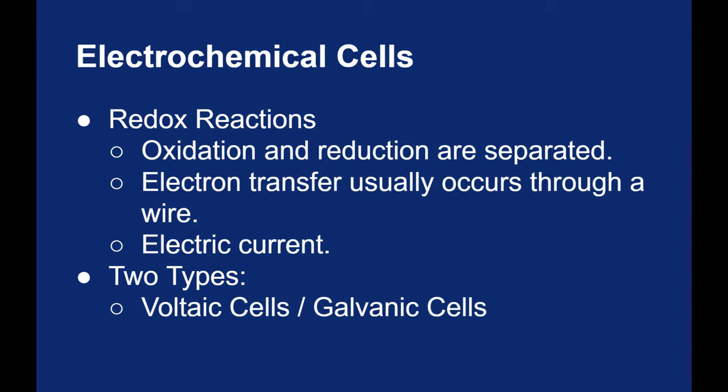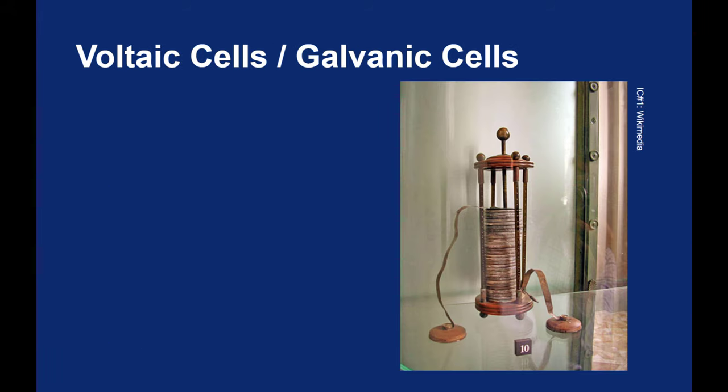The voltaic cell, the one that we looked at the previous picture, also called a galvanic cell, these reactions are spontaneous. They release energy. Electrolytic cells are non-spontaneous. They require energy to be put in in order to proceed. So let's start with Volta's voltaic pile, his first battery.